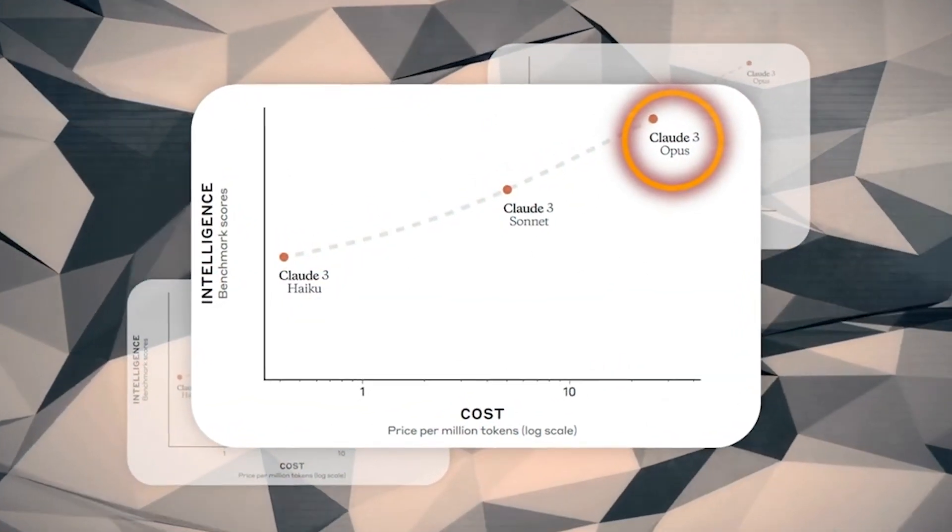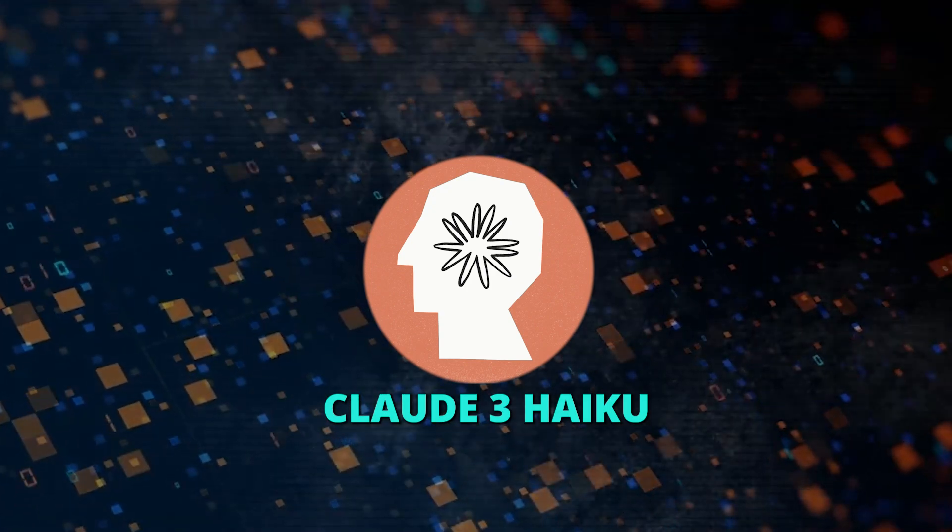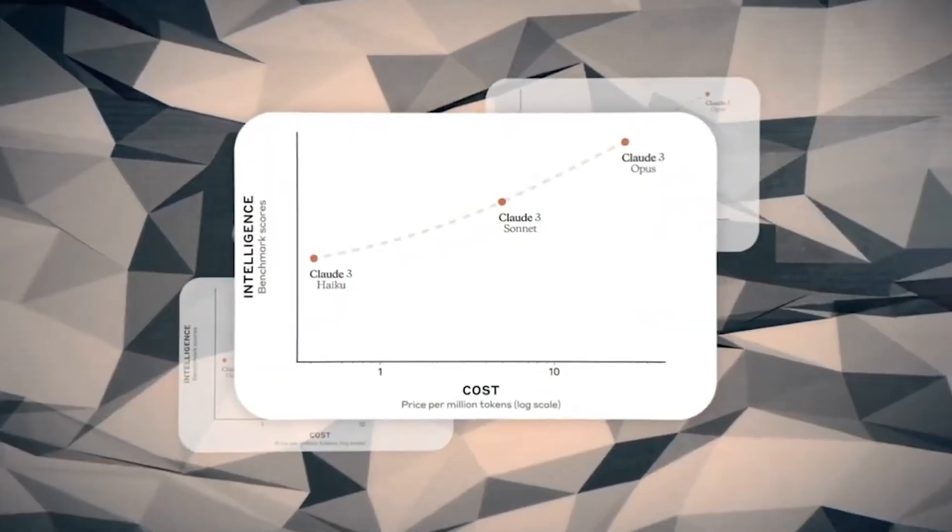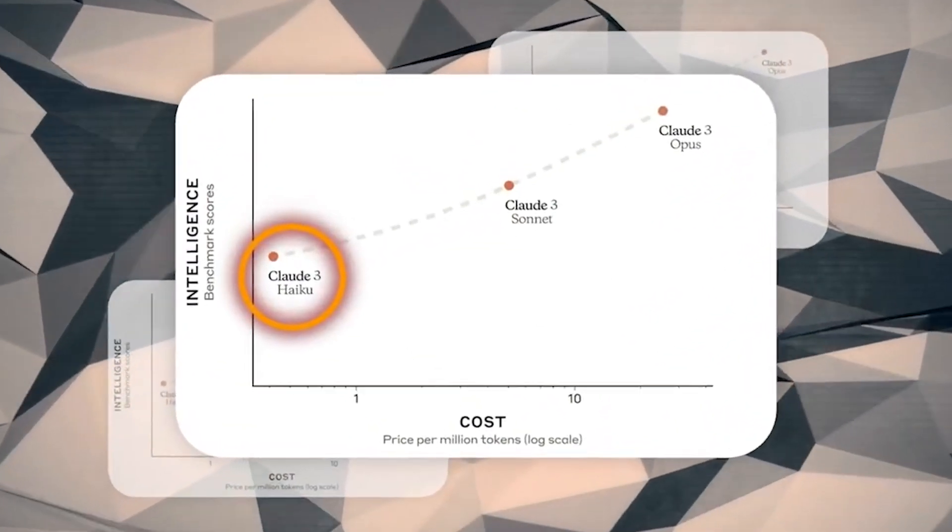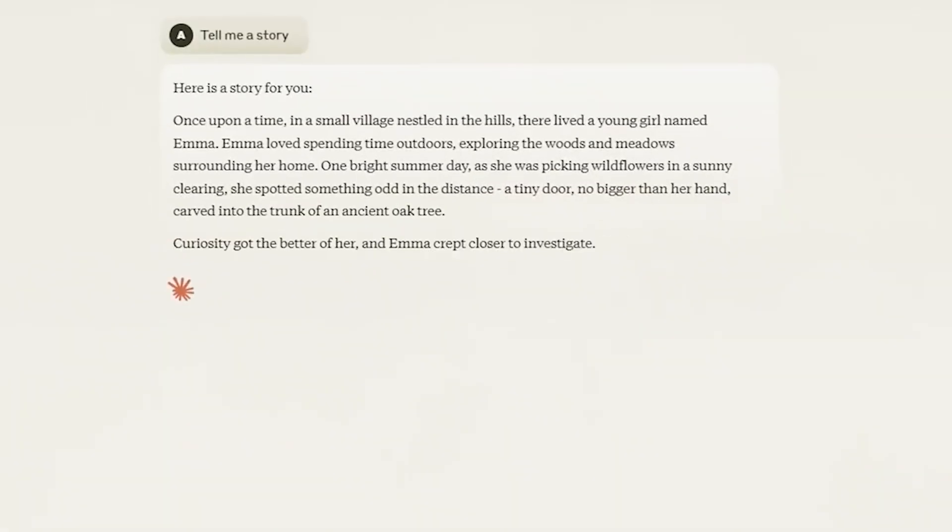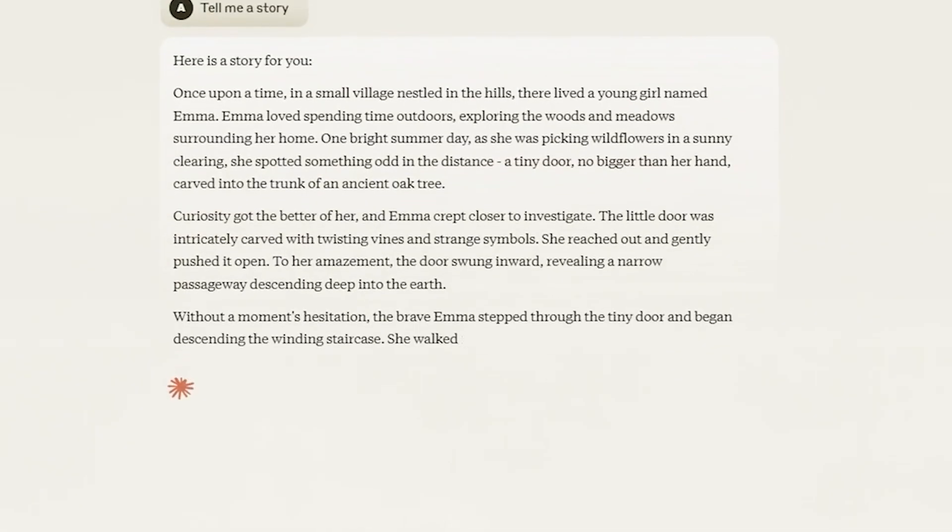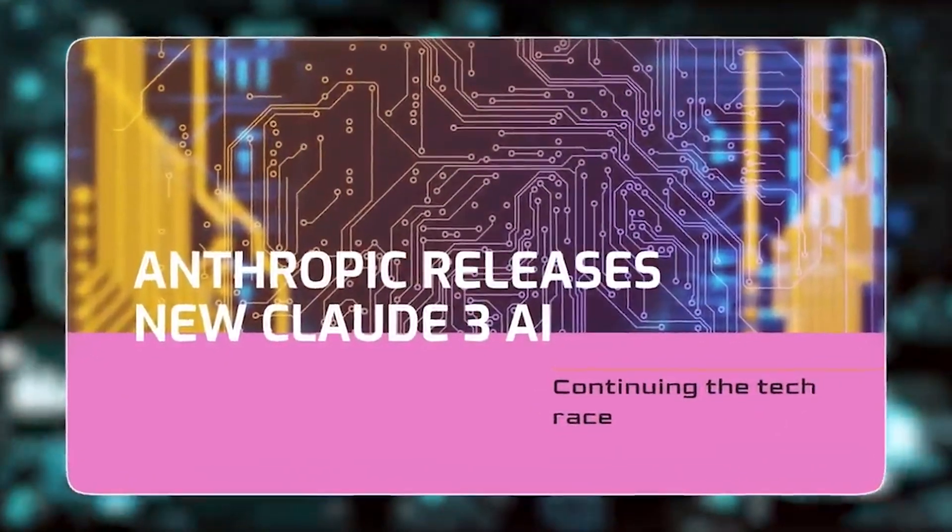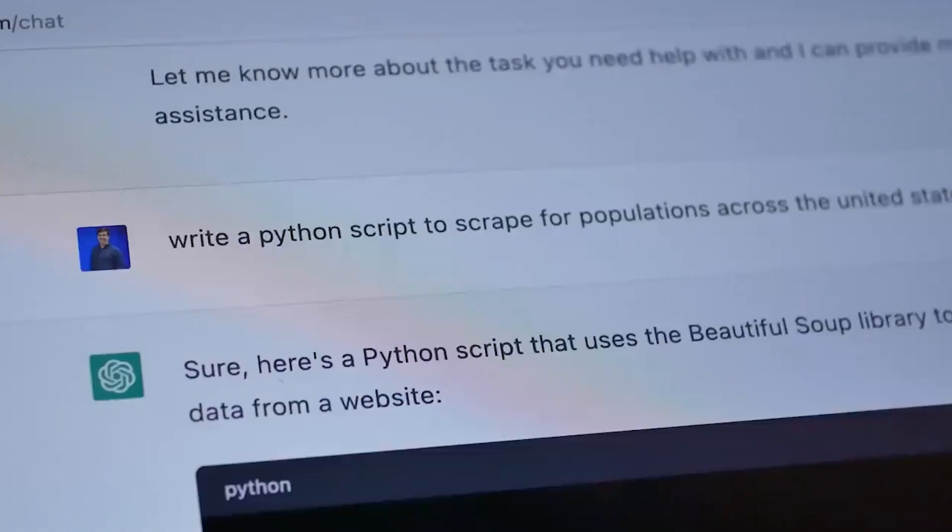Ever wonder how AI can simplify your life? Meet CLOT3 Haiku, the game-changer. CLOT3 Haiku is really good at understanding and answering simple questions quickly. This makes it great for tasks where the user needs an answer right away, like chatting with a customer or moderating content online. One of the cool things about Haiku is that it can understand and analyze images, not just text.